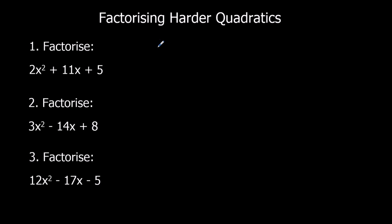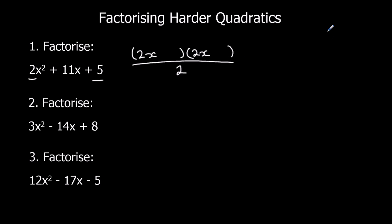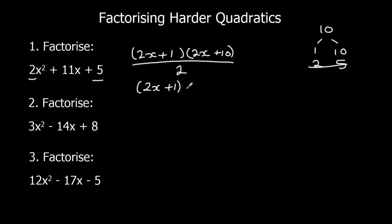The first one: the coefficient of x squared is 2, so we're going to write 2x in each bracket and put it over 2. Then first times last: 2 times 5 is 10. Factors of 10: 1 and 10, or 2 and 5. Which can give me 11? I can't use 2 and 5, so I need 1 and 10 — put plus 1 and plus 10, which gives 11. Then simplify by dividing by 2. I can't divide the first bracket, so I leave it. I divide the second bracket: 2x divided by 2 is x, and 10 divided by 2 is 5.